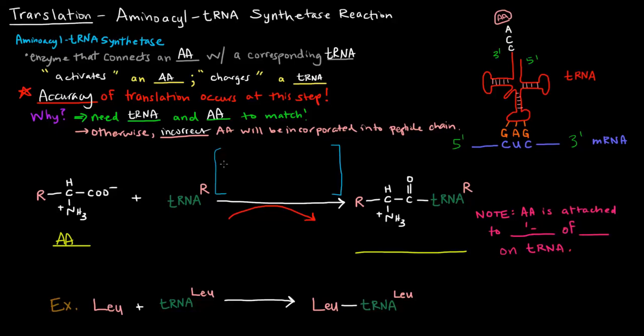Then of course, the aminoacyl-tRNA synthetase enzyme will catalyze the reaction and it requires some energy, so ATP will be converted into AMP and a pyrophosphate, and this pyrophosphate is hydrolyzed off. So this is the equivalent of two ATPs being used for this reaction.